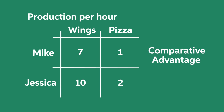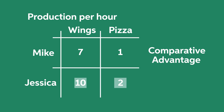For comparative advantage, on the other hand, we have to think about opportunity costs. Mike's opportunity cost of producing one pizza is seven wings. In other words, for every pizza that Mike produces, he is giving up producing seven wings. Similarly, Jessica's opportunity cost for producing two pizzas is ten wings, or you could also say one pizza costs five wings. Therefore, Jessica has the comparative advantage for producing pizzas because she only has to give up five wings per pizza produced, and Mike has to give up seven wings per pizza produced.